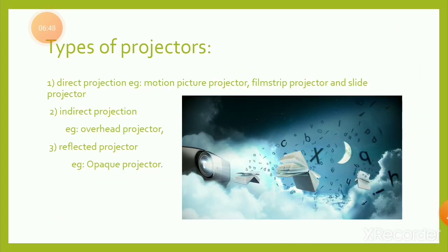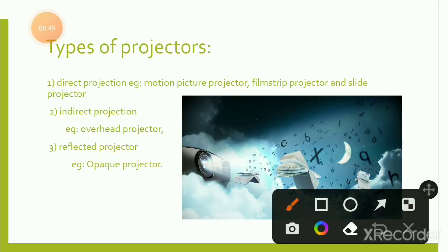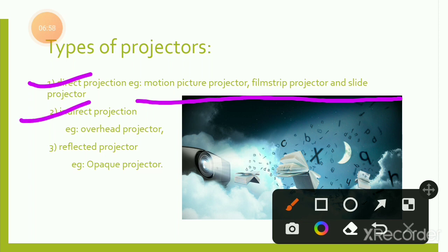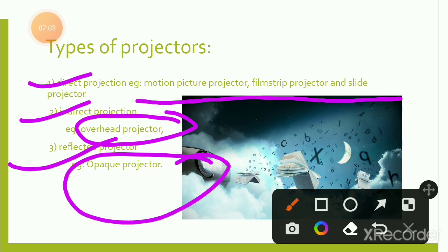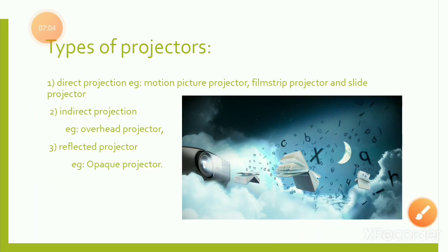Types of projectors: direct projection includes motion picture projector, film strip projector, and slide projector. Indirect projection includes overhead projector. Reflected projection includes opaque projector.